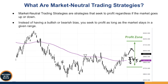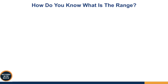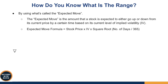This definitely takes off the stress and the pressure of picking a direction. You do not actually have to pick a direction — you just have to say the market is going to stay within a certain range, and then you're going to profit. So the question becomes: how do you exactly know what that range is? How do you know where the market is going to be trading in the next 30 to 60 days? The answer lies in what's called the expected move. This is very important key terminology when you want to trade options.